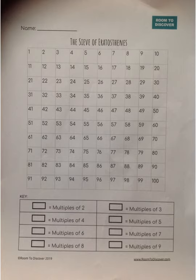I need you to grab a bunch of colored pencils and make sure that this is printed out so you can color it. The first thing we're going to do is take red and put an X right through the 1. Because we're focusing on prime numbers here, I'm putting an X through the 1 because it is not prime and it is not composite.